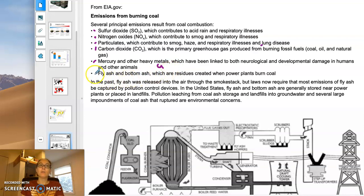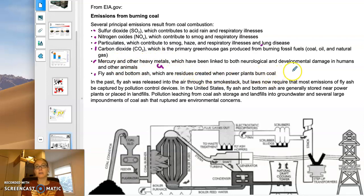When you burn coal, you end up with a lot of ash at the bottom because not all of it combusts perfectly. That ash is often contaminated with heavy metals, and the way we dispose of it is not always the most secure — so we have issues with environmental pollution when that ash gets into the environment.